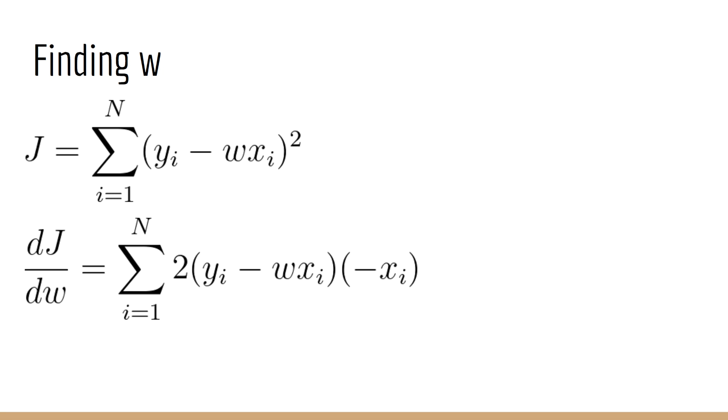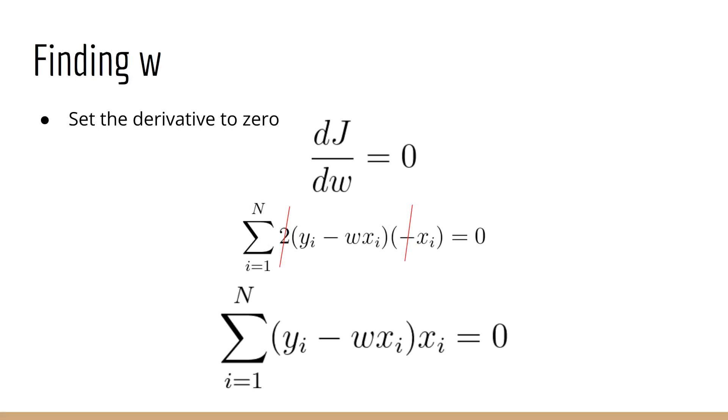The next step is to differentiate J with respect to w. For this course, I'm going to assume that you know how to do this, since it's part of the prerequisites, and on top of that, it's very simple. The 2 comes down, and then we differentiate the inside. That's just the derivative of y sub i minus w times x sub i, and that derivative is minus x sub i. And remember, since we want to find the minimum of J, we want to set the derivative to 0. Note that we can divide both sides by 2 and the 2 disappears, since 0 divided by 2 is still 0. We can also get rid of the negative sign, since 0 times negative 1 is still 0.